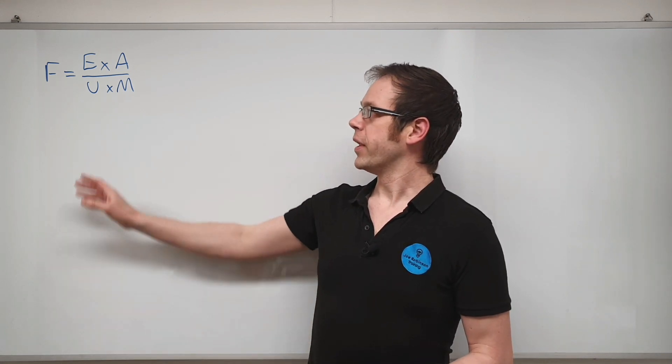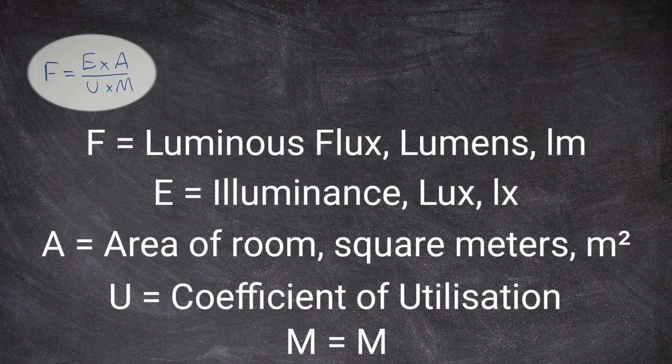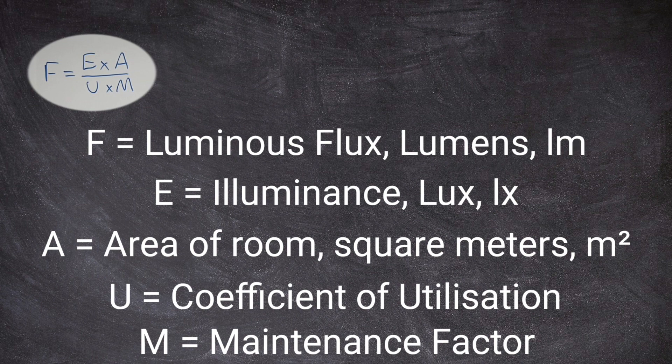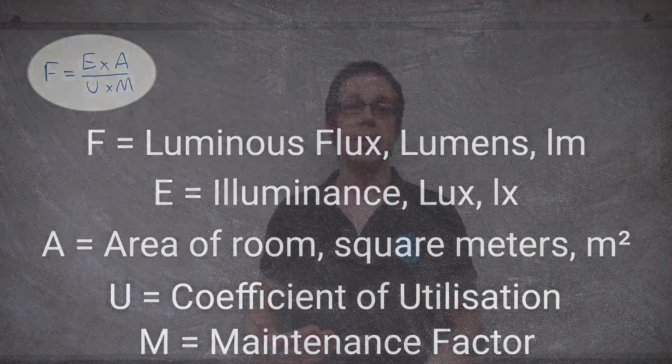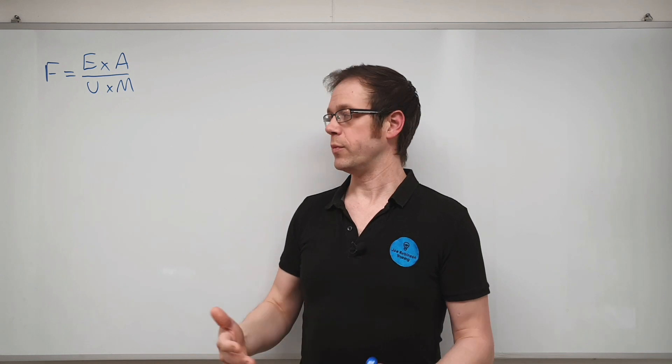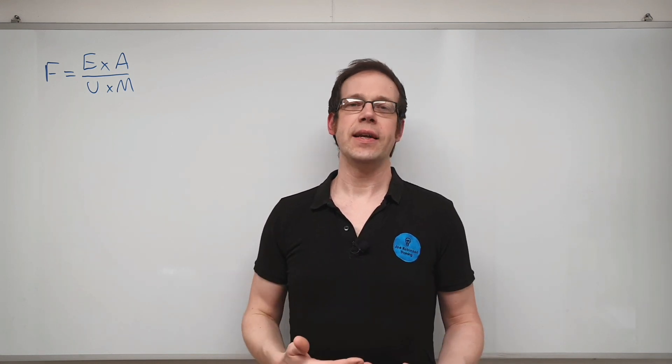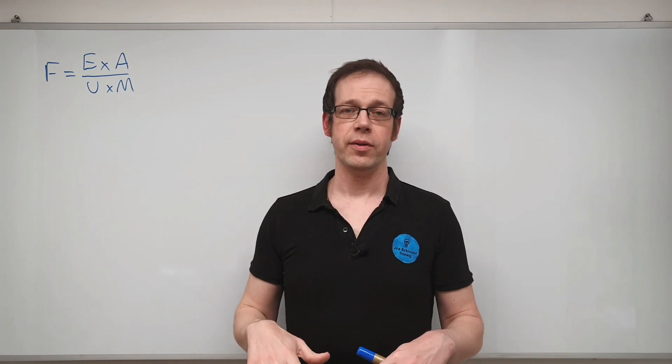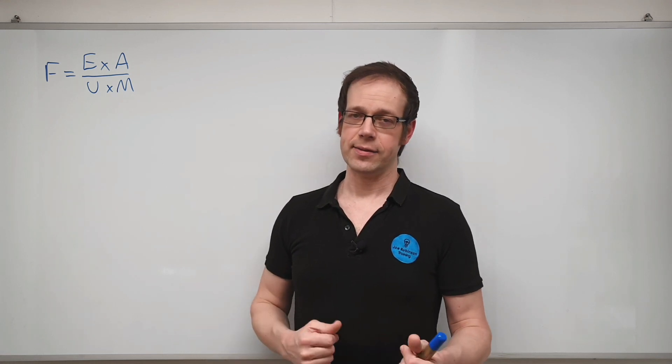We've then got this capital M here and this M is the maintenance factor so if you think about a light fitting when you first install it it gives off a certain amount of light and then what happens is that over time it starts to get covered in dust and dirt again depending on the environment that it's in whether it's a clean room or a dirty room what it's being used for and that will start to reduce the light output and there's a number of other factors that will also affect how much the light output from the light fitting reduces including how often the light fittings are cleaned and things like that.